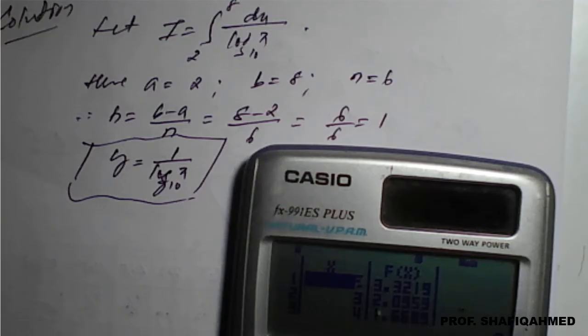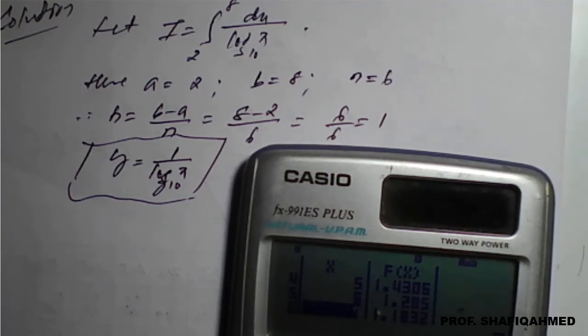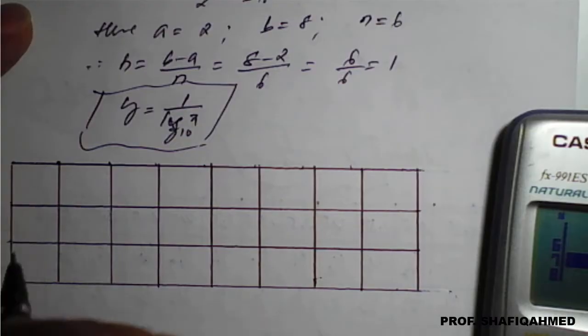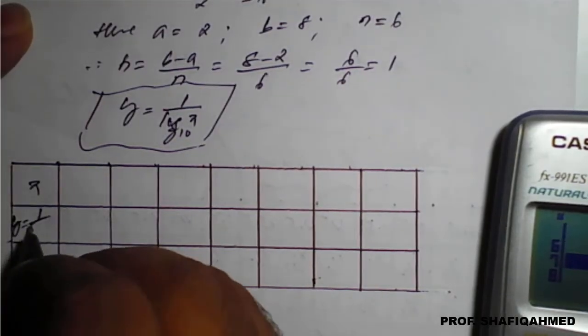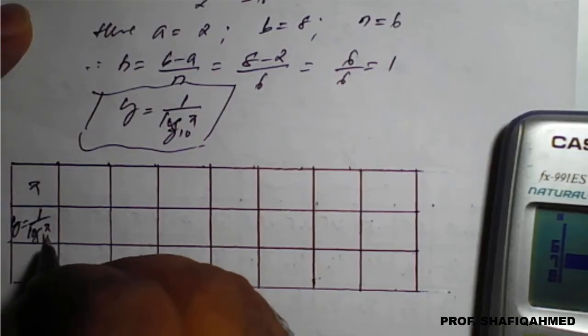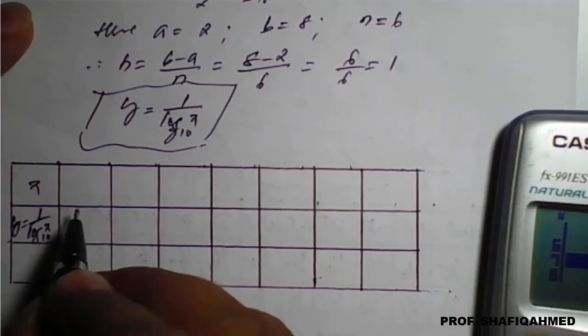You can see here the values vary from 2, 3, 4, 5, 6, and 7. So we will prepare a table and substitute the values from the calculator. This is the x value, and y value is 1 upon log of x to the base 10.